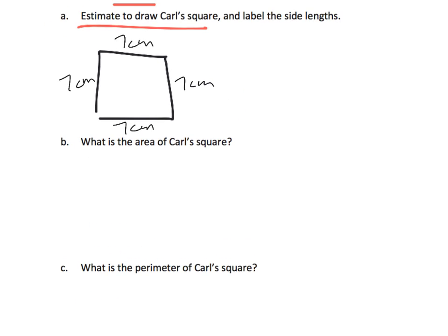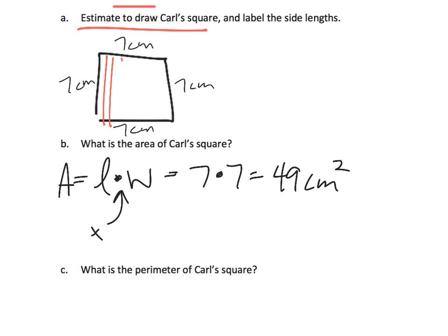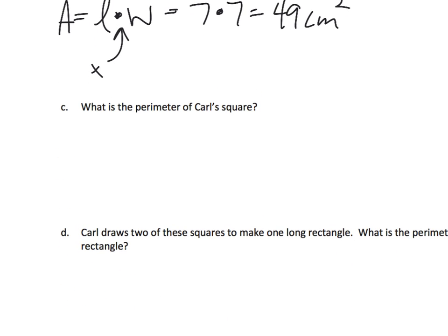It says label the side lengths, so I did. What is the area? Well, the area is length times width, so I'm going to use the little dot that means multiply. Seven times seven is 49, so it's 49 square centimeters. If we were to count all the little squares, there would be 49.